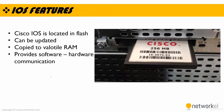Let's take a look at the features of IOS. As we talked about in the previous section, Cisco IOS is located in flash. IOS is located in here. But when the device is working, as we talked about in previous sections too, IOS is copied to volatile RAM. Cisco is updating the image files, the IOS files, and our IOS images can be updated. And IOS provides software-hardware communication as the other operating systems.